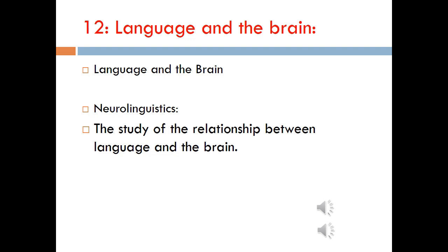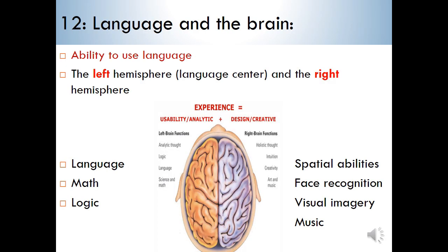Simply speaking, neurolinguistics is the field of linguistics that studies the relationship between language and the brain. Neurolinguistics is related to investigating how language is comprehended in the brain and how production occurs in the brain as well.